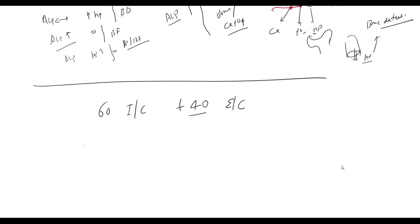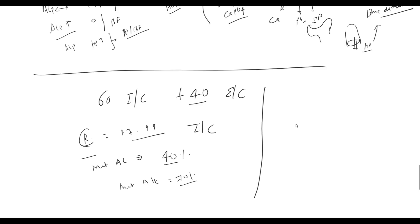60% of buffering capacity is provided by intracellular buffer and 40% by extracellular buffer. In respiratory acidosis or alkalosis, 97-99% buffering is provided by intracellular buffer. In metabolic acidosis, 40% is extracellular buffering. In metabolic alkalosis, 70% is extracellular. Bicarbonate is the major extracellular buffer. Phosphate and protein are major intracellular buffers. Bicarbonate and hemoglobin are major blood buffers. Phosphate and ammonia are major urinary buffers.